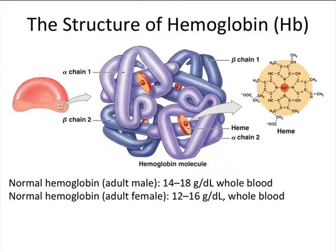We'll talk about the function of hemoglobin in much more detail when we get to the respiratory chapter. For now, in the adult male there's about 14 to 18 grams per deciliter of hemoglobin in whole blood, and in females about 12 to 16 grams per deciliter — I'm just pointing out reference ranges for comparison.